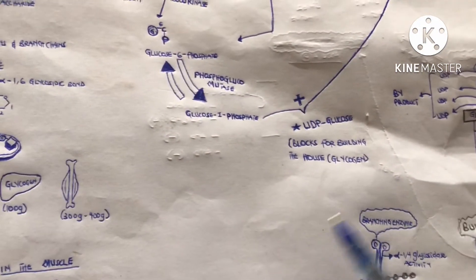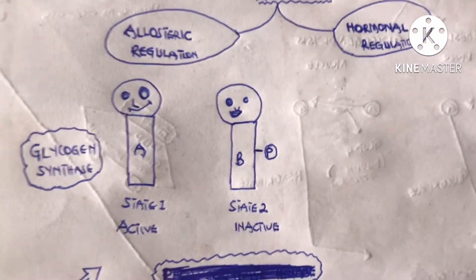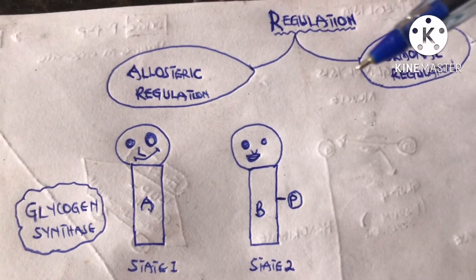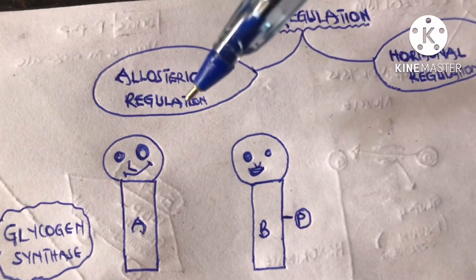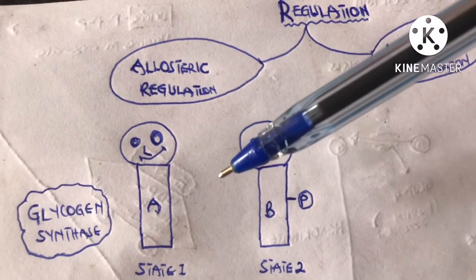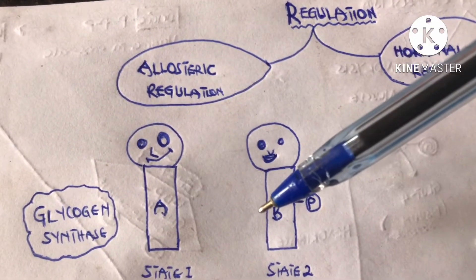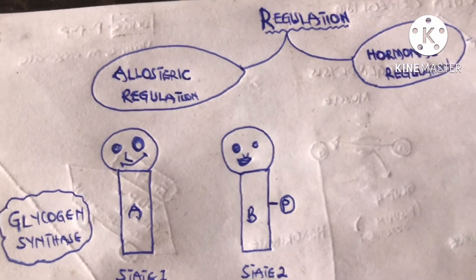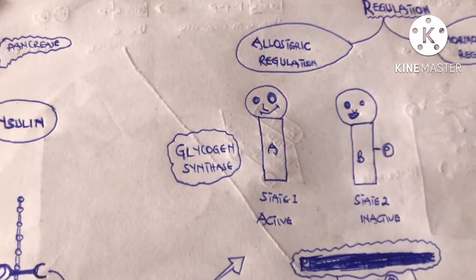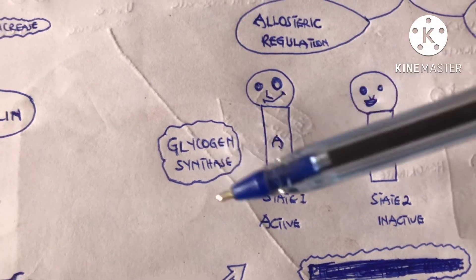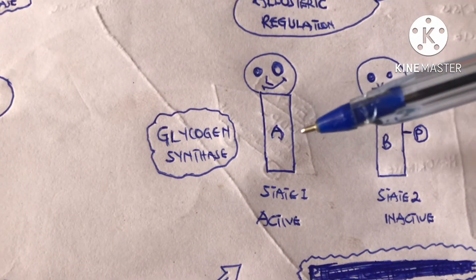That is glycogen synthesis or glycogenesis. Now let's look at its regulation. There are two main ways to regulate glycogenesis: allosteric regulation and hormonal regulation. The main enzyme being regulated in glycogenesis is glycogen synthase, which can exist in two forms: the A form and the B form.